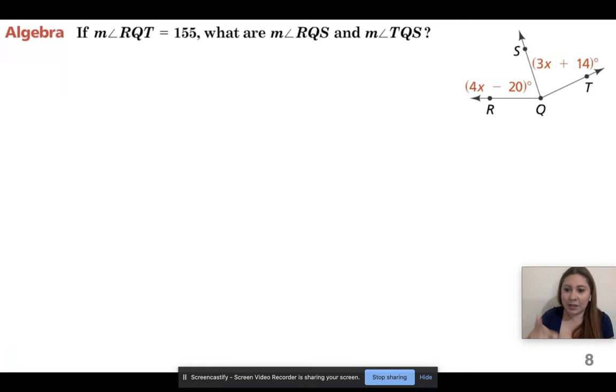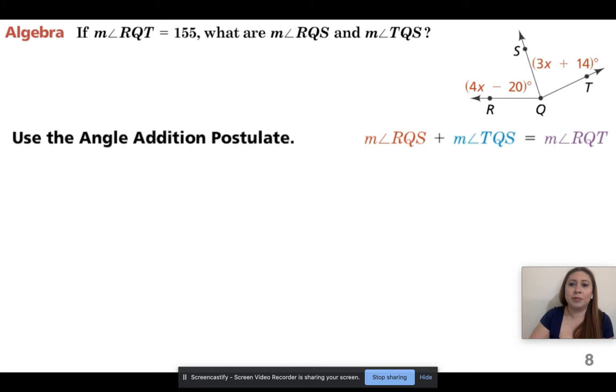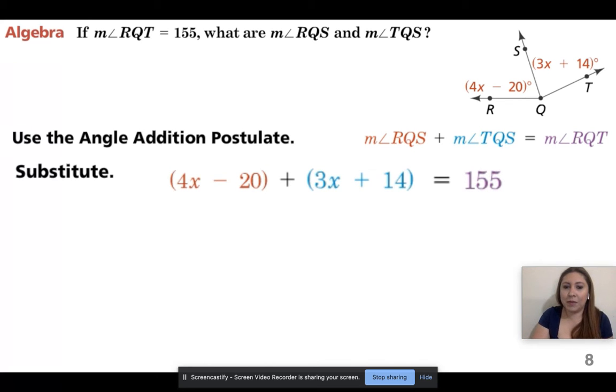It's telling you this whole thing is 155. It wants to know what is this angle and what is this angle. Do not just solve for x and then walk away. That's bad. So add both of the angles together. So substitute. What is RQS? Well, RQS is 4x minus 20. What is TQS? Well, TQS is this part right here, that's 3x plus 14.